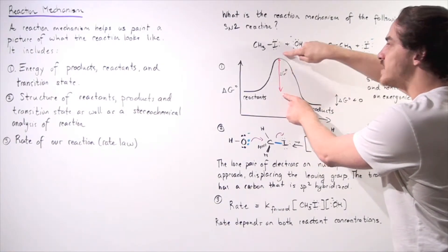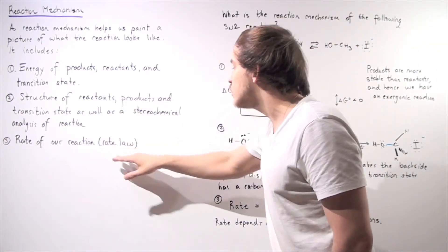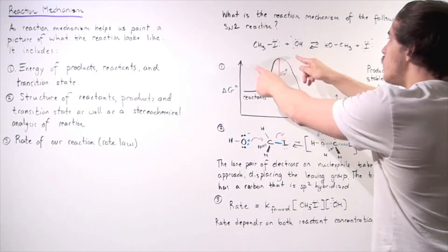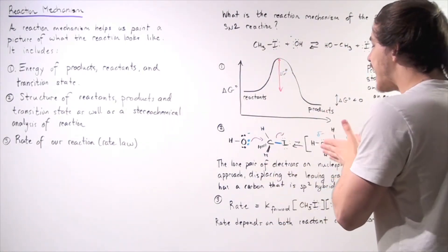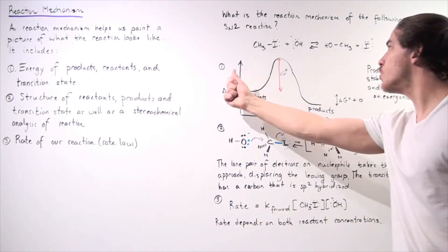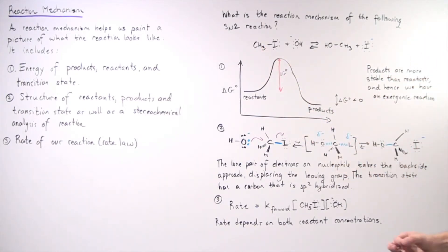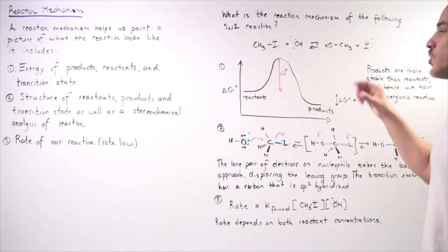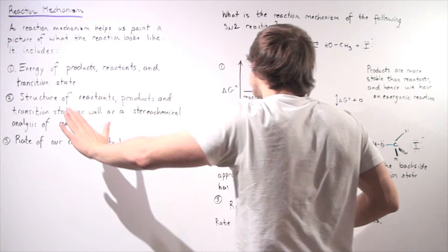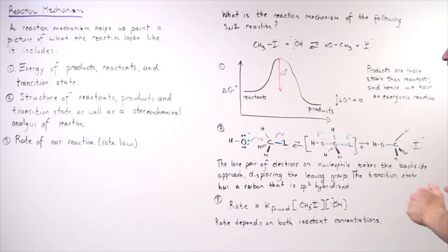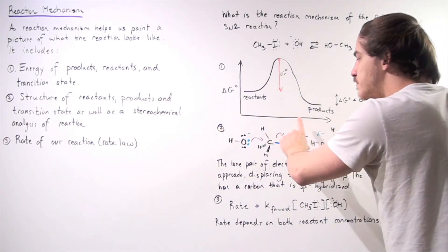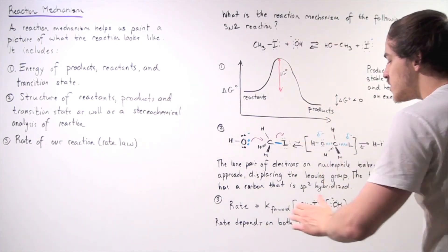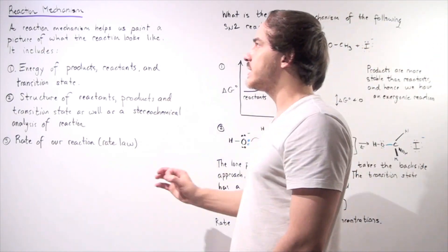This activation energy also determines the rate of our reaction. The rate law of an SN2 reaction reflects that both reactants are involved: rate equals the rate constant multiplied by the substrate concentration multiplied by the nucleophile concentration. So the rate depends on both the substrate and the nucleophile. The reaction mechanism helps us paint the entire picture of what our reaction looks like — including the stereochemical analysis, the energies, and the rate of our reaction — whenever we want to fully depict the reaction mechanism.